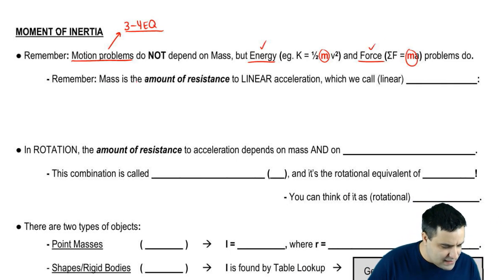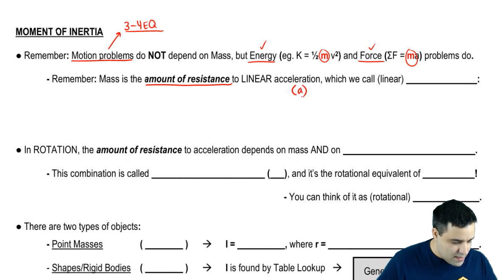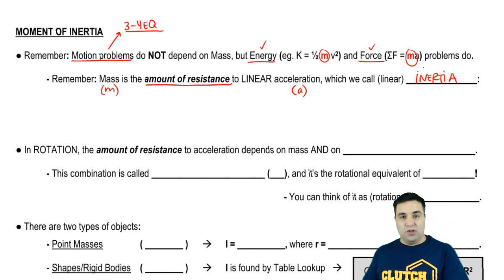I want to quickly remind you that mass is the amount of resistance to linear acceleration. Linear acceleration is A. Mass M is resistance to A. And we call that inertia. When you resist acceleration, you're resisting change in velocity. Resisting change is inertia.